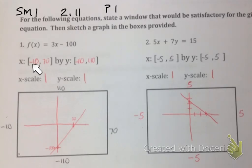So I ended up with the x minimum negative 10, x maximum of 70, y minimum negative 110, y maximum of 110.